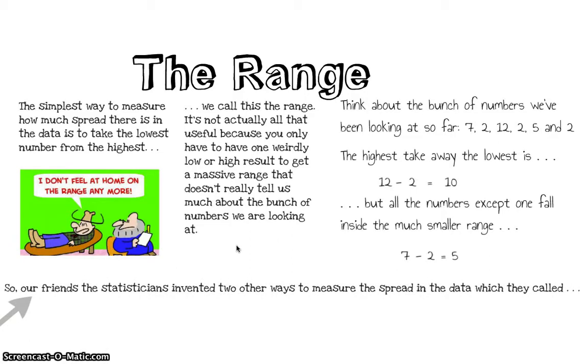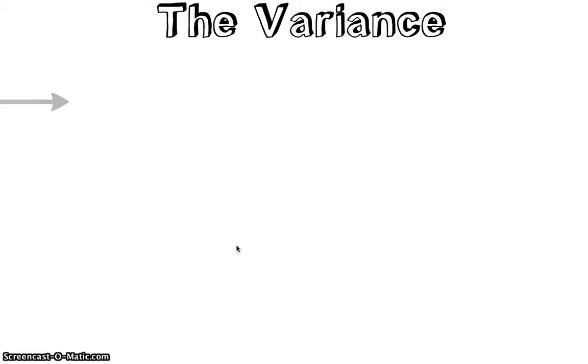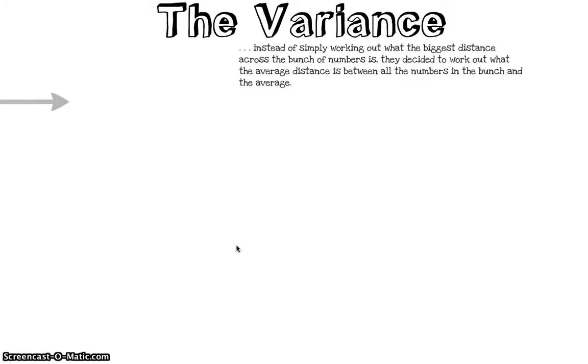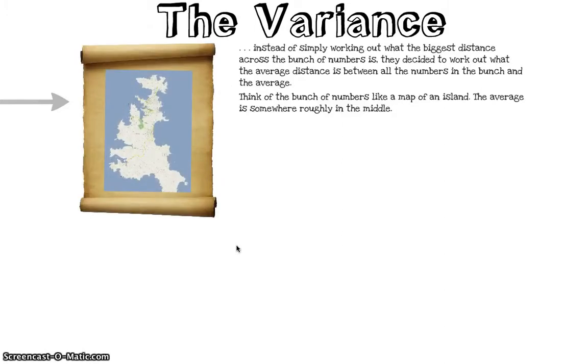So our friends the statisticians have invented two other ways to measure the spread in the data, and they called the first one of these the variance. So now, instead of simply working out the biggest distance across the bunch of numbers, they decided to work out the average distance between all the numbers and the average for the bunch.